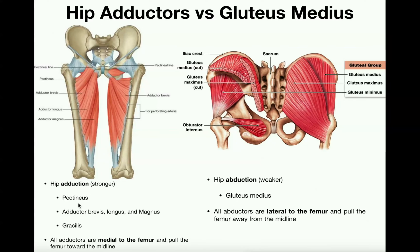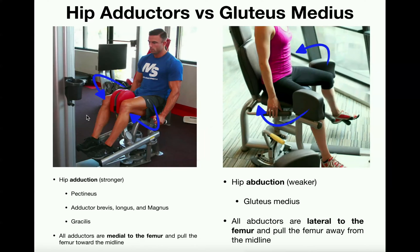Some of the more important adductors are the pectineus, the gracilis, the adductor brevis, adductor longus, and the very large adductor magnus. Hip adduction is moving a limb toward the midline of the body — forcing your thighs toward one another. We can look at an exercise that facilitates this: the adductor machine in a gym, where you forcibly move your thighs close to one another. The act of moving them toward one another is hip adduction, facilitated by these hip adductors.